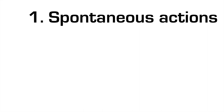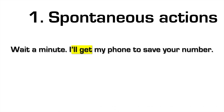So we said number one: we use will for spontaneous actions. Like in this example — wait a minute, I'll get my phone to save your number. So you have your friend who wants to give you his new phone number, and you need to get your phone. So you say: wait a minute, I'll get my phone to save your number. It's spontaneous — at that moment you decided to get your phone and save his number.